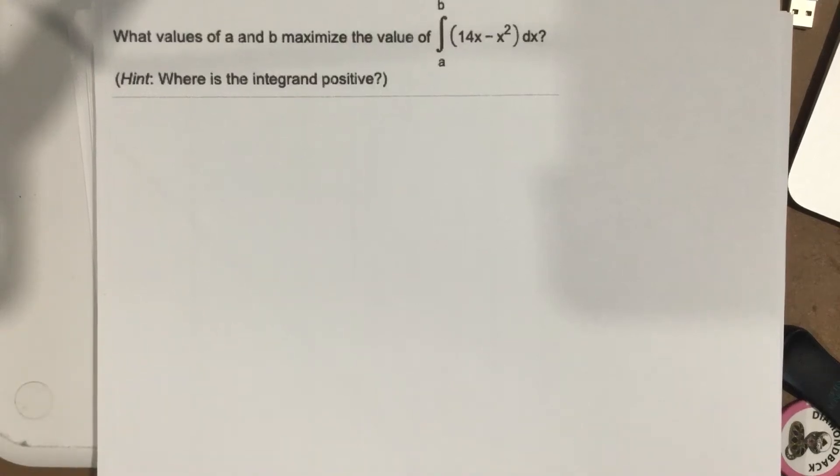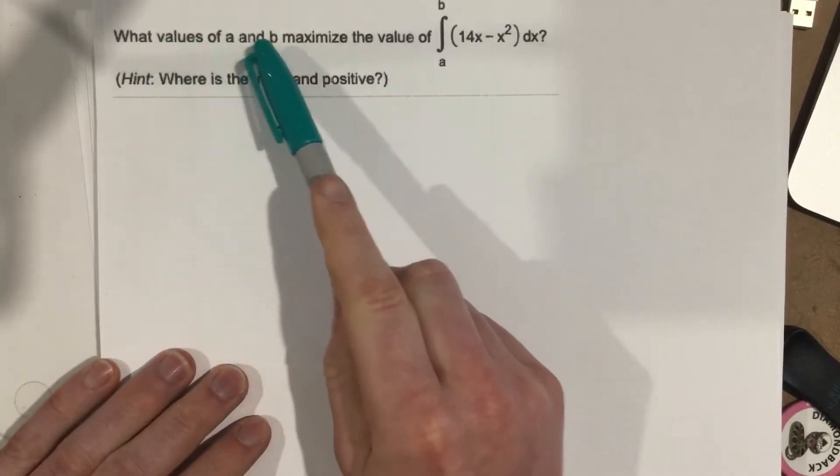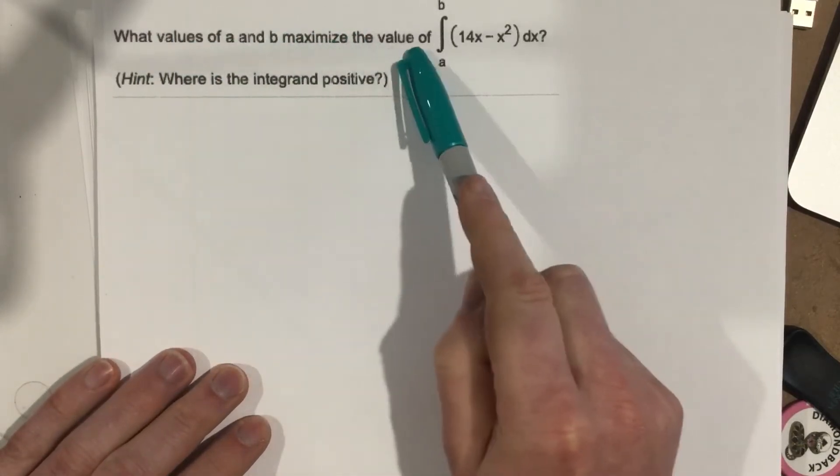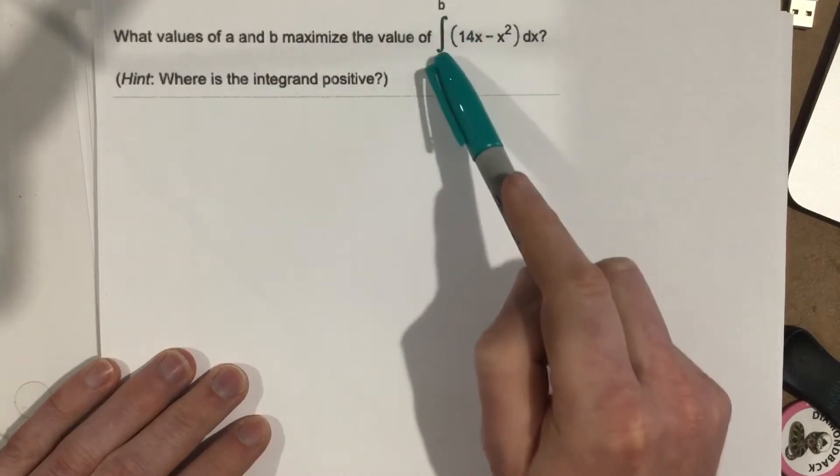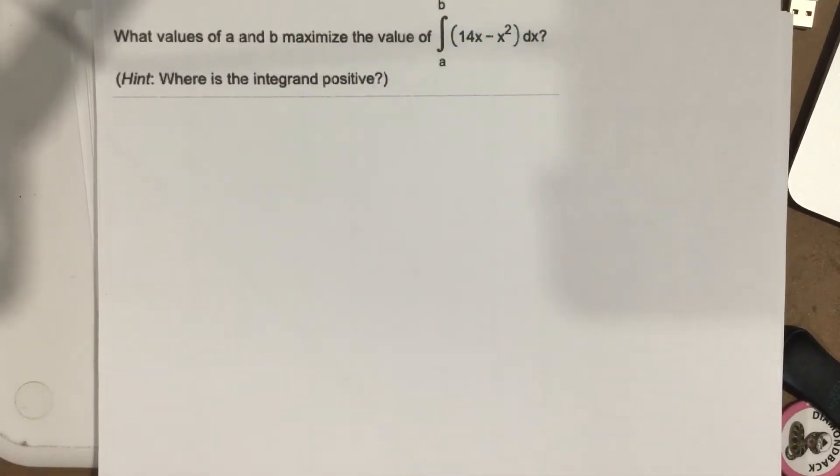This is problem number three from section 5.3. This is an interesting problem because they say what values of a and b maximize the value of the integral from a to b of this function? Let's talk about what would make the area maximal.